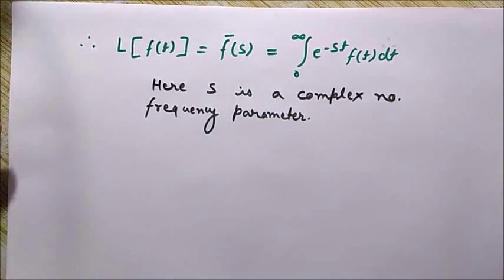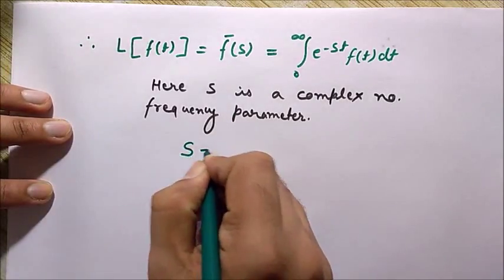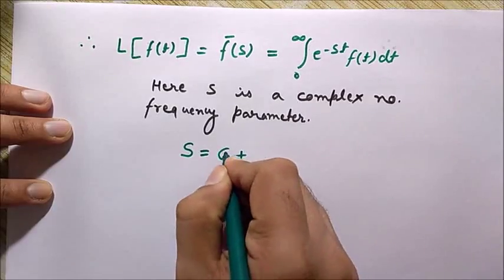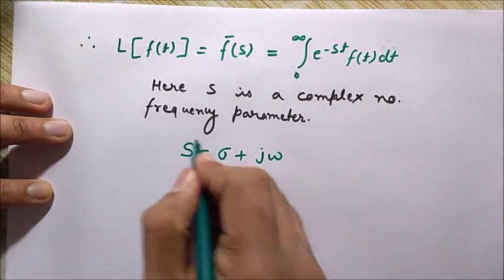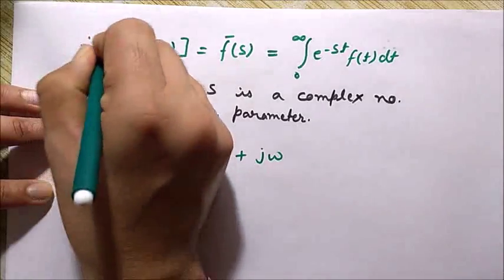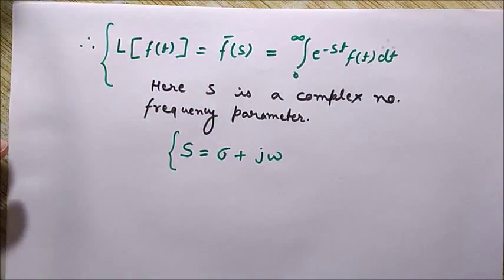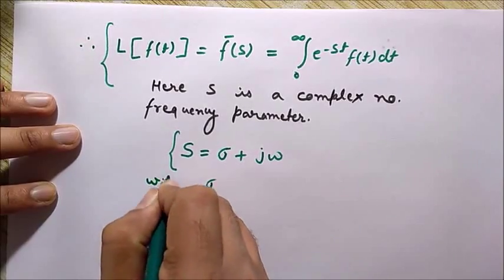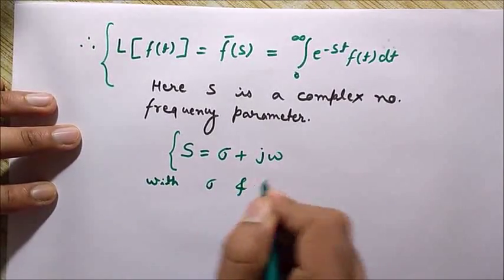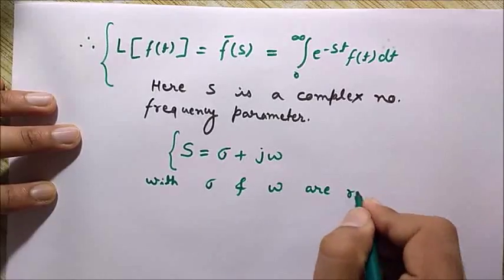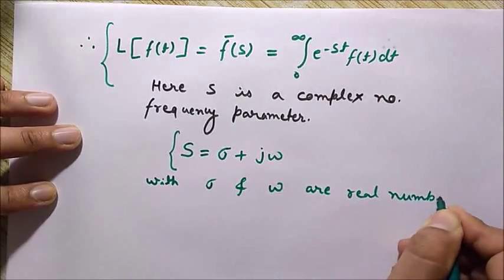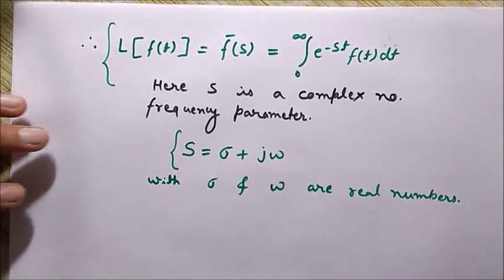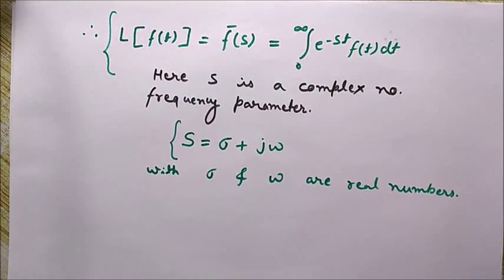We can define s as sigma plus j omega, with sigma and omega as real numbers. Sigma and omega are real numbers.